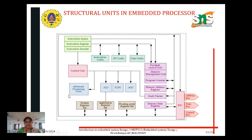This is the block diagram of the structural unit of the embedded processor. It mainly has a control unit and also has buses — address bus, data bus, and control bus. Control information is shared through the control bus, data is shared by the data bus, and address information is shared by the address bus. We also discussed the instruction register, instruction decoder, and instruction queue.